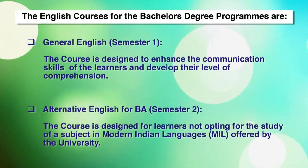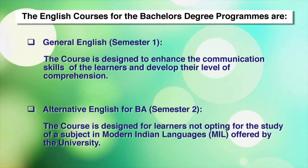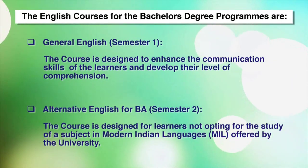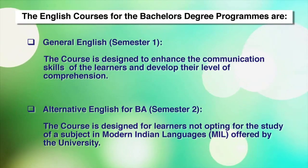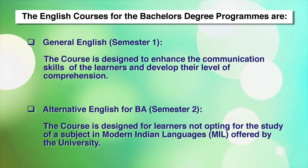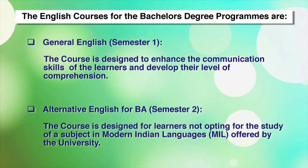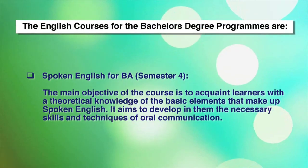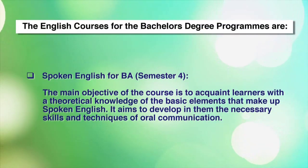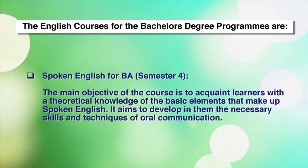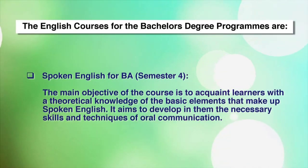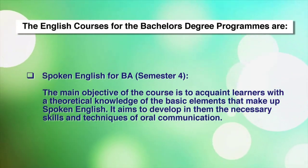Next is the Alternative English course for BA, semester two. This course is designed for learners who do not opt to study a subject in modern Indian languages, that is MIL, offered by the university. Then, in the fourth semester, you have Spoken English for BA learners. The main objective of this course is to acquaint learners with a theoretical knowledge of the basic elements that make up spoken English.